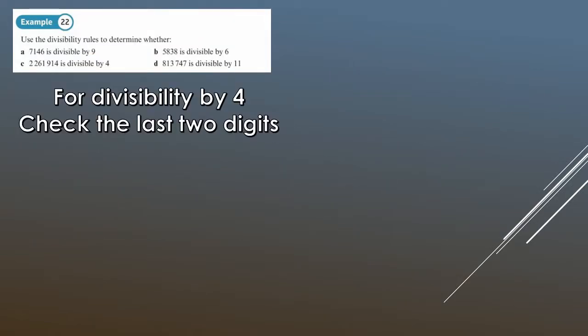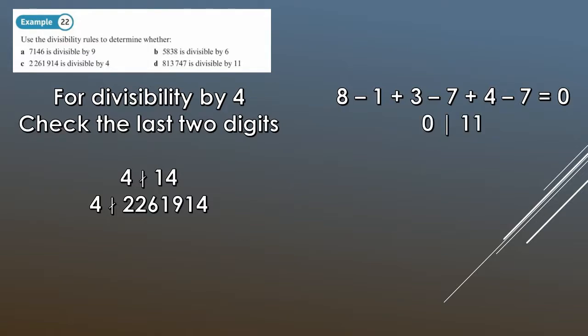The next two. So for divisibility by 4, you check the last two digits. So is 14 divisible by 4? Well, no, because 4, 8, 12, 16 were too big. It's not divisible by 4, so 4 doesn't divide the number. And then for the last one, divisibility by 11, remember, we alternate the digits. So you start with the first digit being positive, and then subtract, plus, subtract, plus. So 8 minus 1 plus 3 minus 7 plus 4 minus 7. Well, that's equal to 0. But remember, 0 does divide 11. So 11 does divide 813,747.